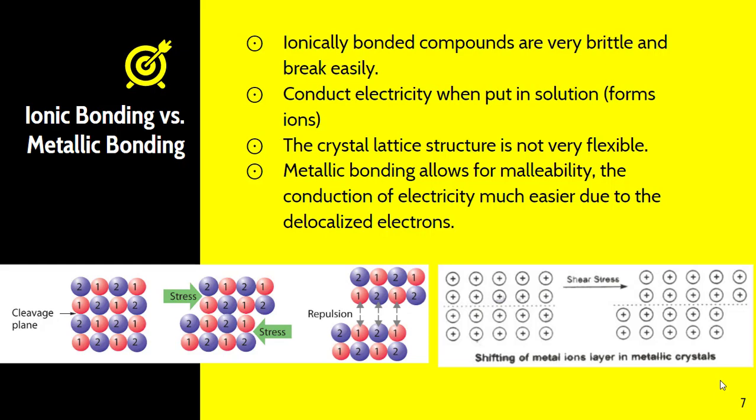Remember, the whole point of ionic solids is to minimize the amount of repulsions and maximize the amount of attractions. So as a result, when the stress occurs and you have negative charges near each other or positive charges near each other, they are going to repel, which is what causes it to break very easily and make it brittle. The crystal lattice structure is not very flexible.